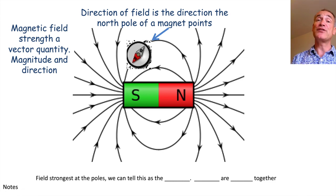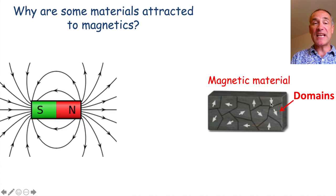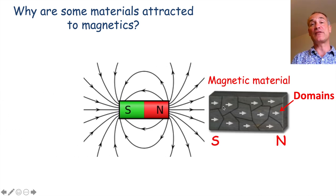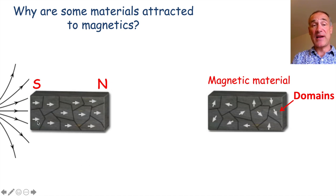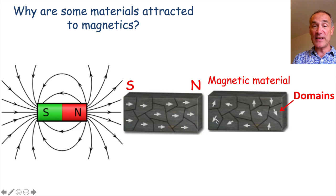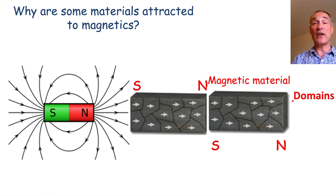Finally I just want to show one other thing which is about how we can induce magnetism — this is more GCSE than Key Stage 3. Remember, magnetic materials have domains which are all jumbled up and cancel each other out. But if we bring a magnet close to them, they line up so that we get magnetism — only while the magnet is there. If we take the magnet away they all go jumbled up again and it loses its magnetism. So an induced magnet is one that can only attract a magnetic material while the magnet is touching it.